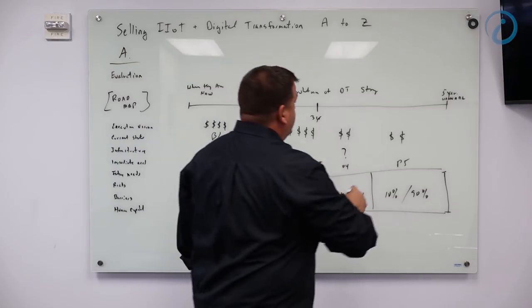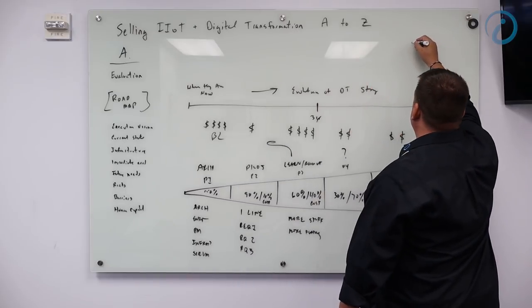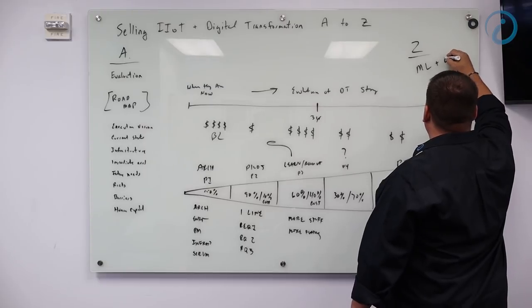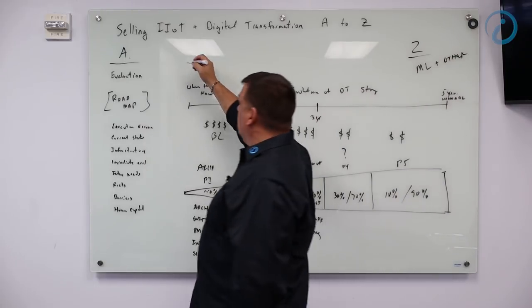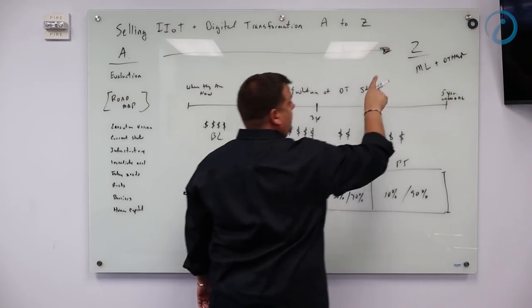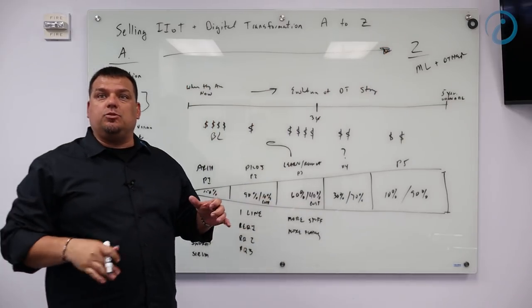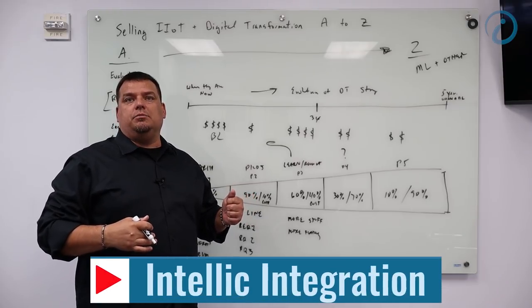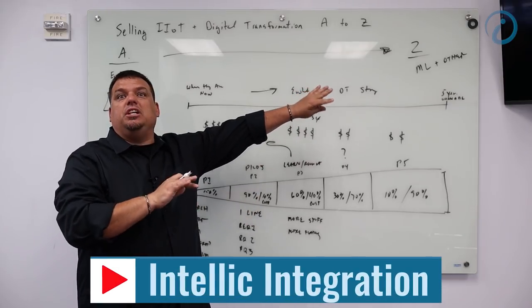If A is here and Z is here, what is Z? The Z is going to be machine learning and other. When we get to the other end of this engagement, what we are doing is we're developing truly cost saving solutions in the machine learning space.